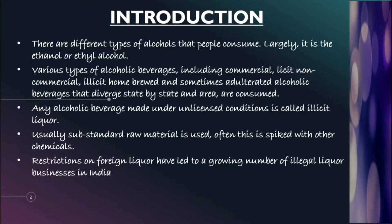There are different types of alcoholic beverages made in different parts of the state and country. Any alcoholic beverage made under unlicensed conditions is known as illicit liquor. The word illicit means illegal. So whenever an alcoholic beverage is made under unlicensed conditions — conditions forbidden by the government or by law, or the manufacturing factory is not licensed, or the ingredients used are not up to the mark — all these conditions lead to production of liquor that is called illicit or illegal liquor. Usually substandard raw material is used, and often it is spiked with harmful chemicals like methanol, which is basically a form of adulteration of liquor.